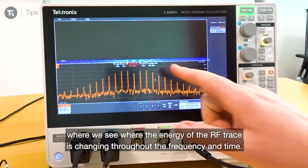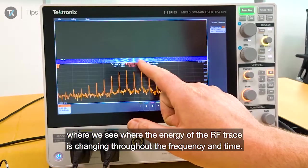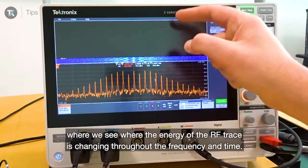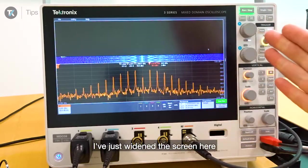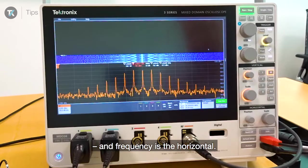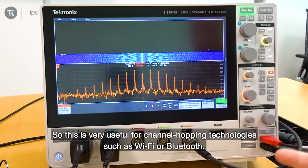We see where the energy of the RF trace is changing throughout the frequency and time. Time is the vertical axis—I've just widened the screen here—and frequency is the horizontal. This is very useful for channel hopping technologies such as WiFi or Bluetooth.